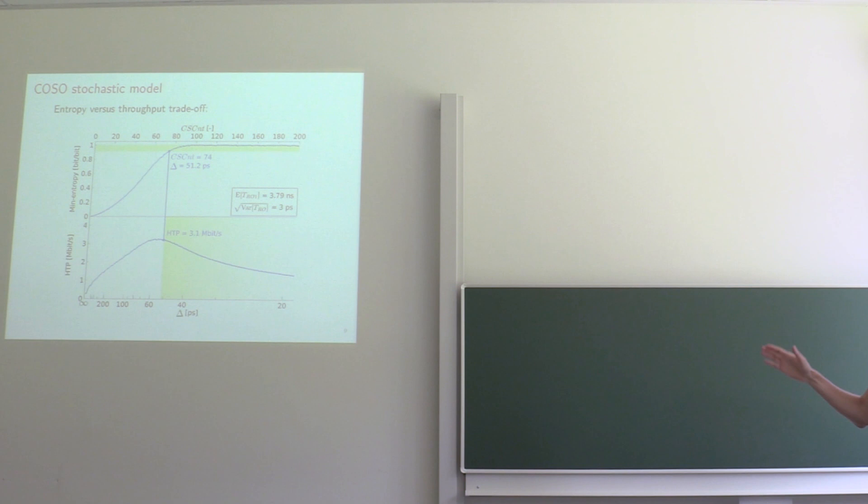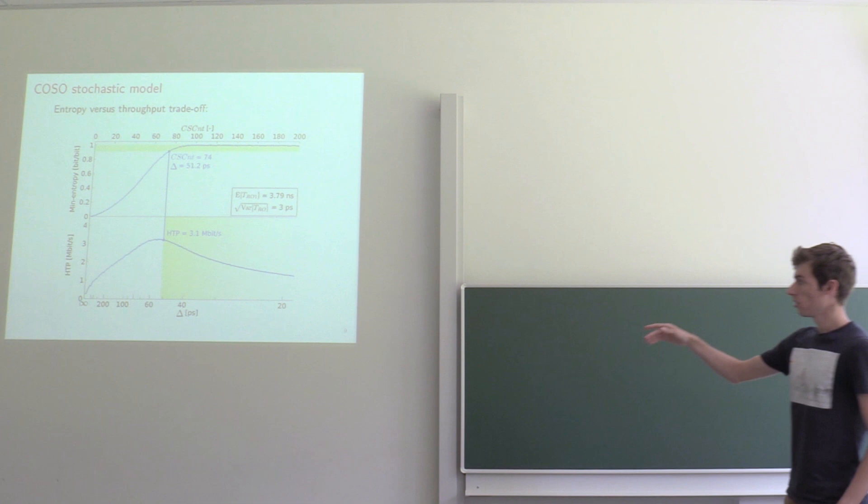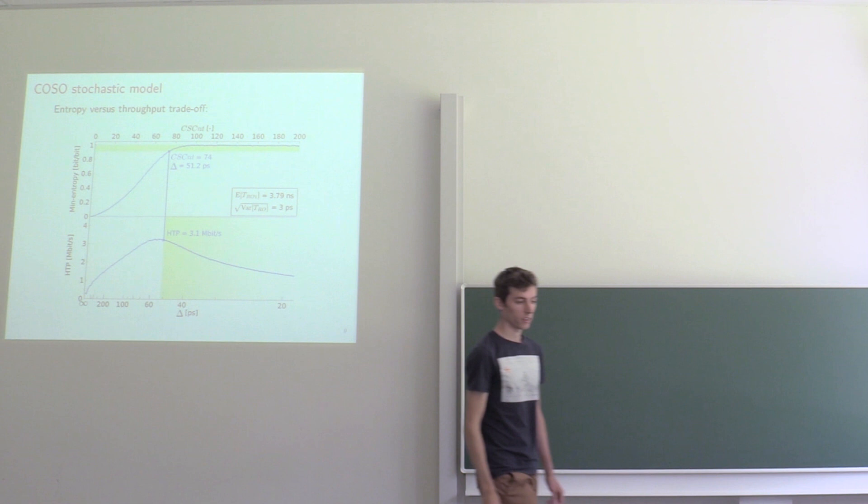So what we want is a configuration that has a period offset close to this border here, but slightly to the right to be okay with the standards. But the question is now, how can we achieve such a period offset?